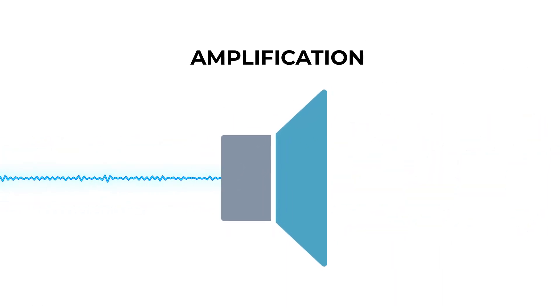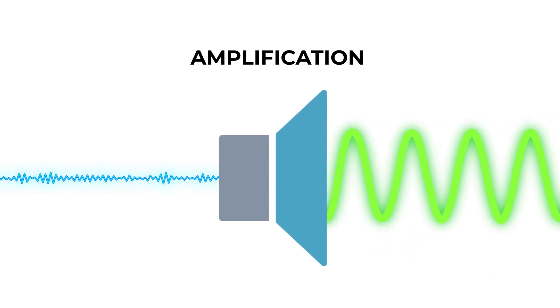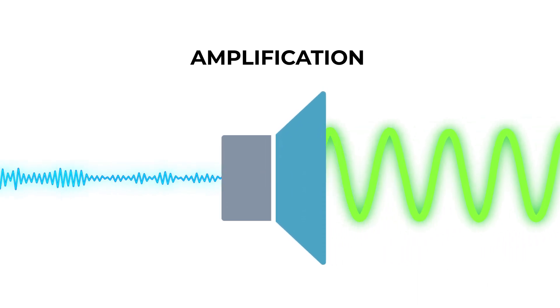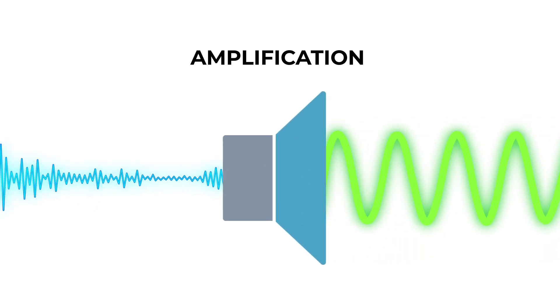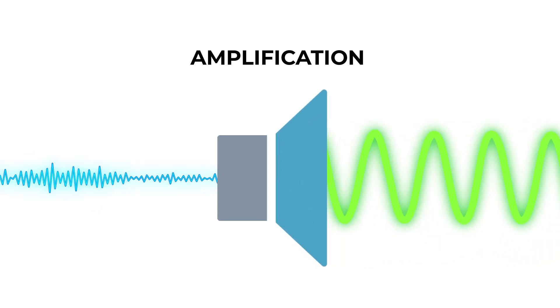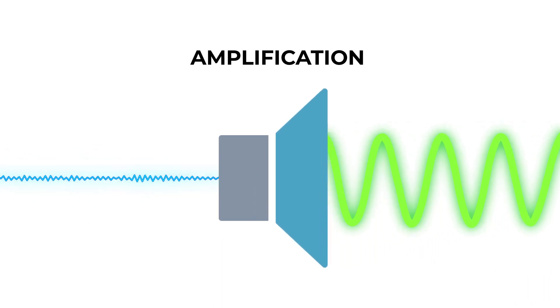Amplification increases the input signal strength or amplitude. With low voltage output sensors such as thermocouples and strain gauges, amplification can increase the resolution of the measurement.